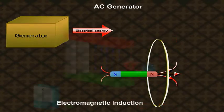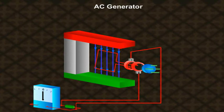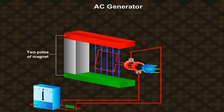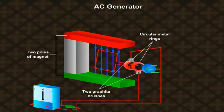We have this rectangular loop in between two poles of a magnet. The ends of the wire are connected to two circular metal rings which is connected to the external circuit by two graphite brushes.